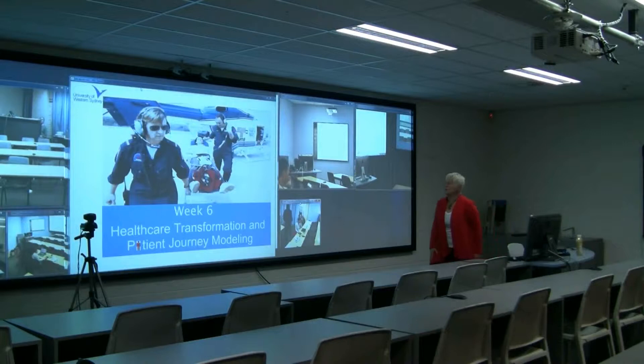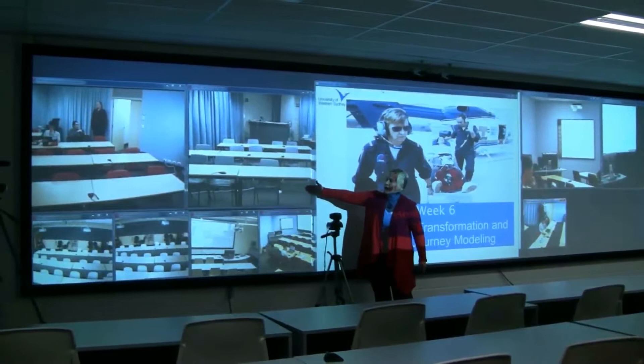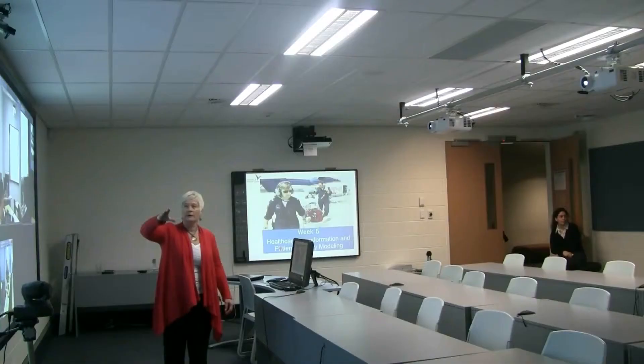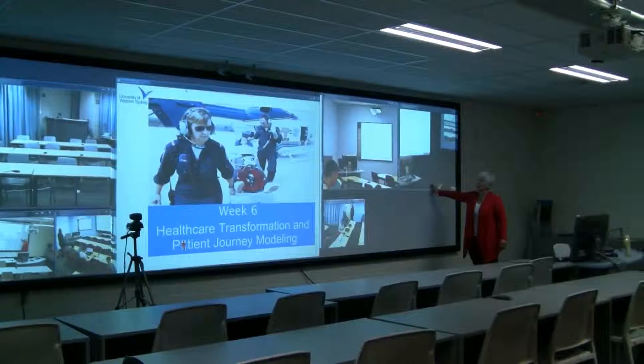Over to your far left, these images are the other campuses. The first one is Penrith, the one on the far side is Campbelltown, and down the bottom I'm seeing my Parramatta students as well. On this side we're actually seeing the two smart boards at the other campuses.